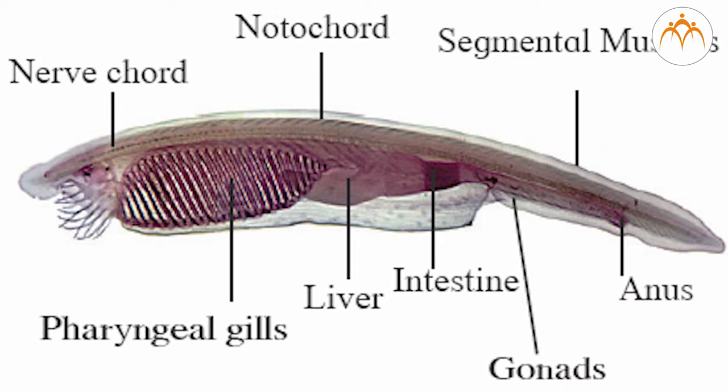Subphylum Cephalochordata: these are small fish-like marine animals. Notochord is present throughout the body length. The pharynx is very large and contains gill slits. These animals are unisexual. Example: Amphioxus.